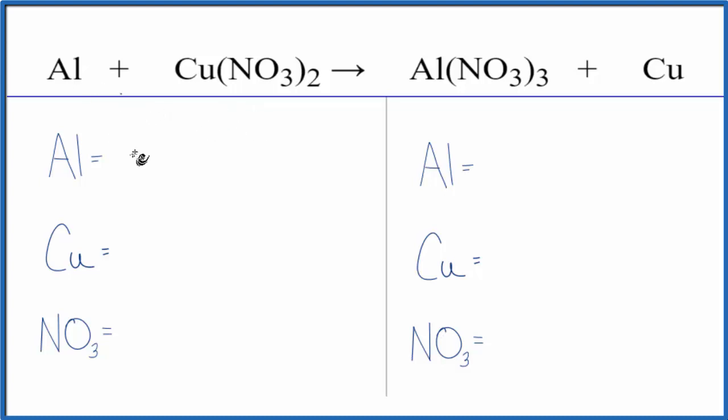We have one aluminum, one copper, but then this nitrate ion NO3, very common in chemistry, nitrate here. And then on the product side we have nitrate as well, so we're going to count this as just one item.